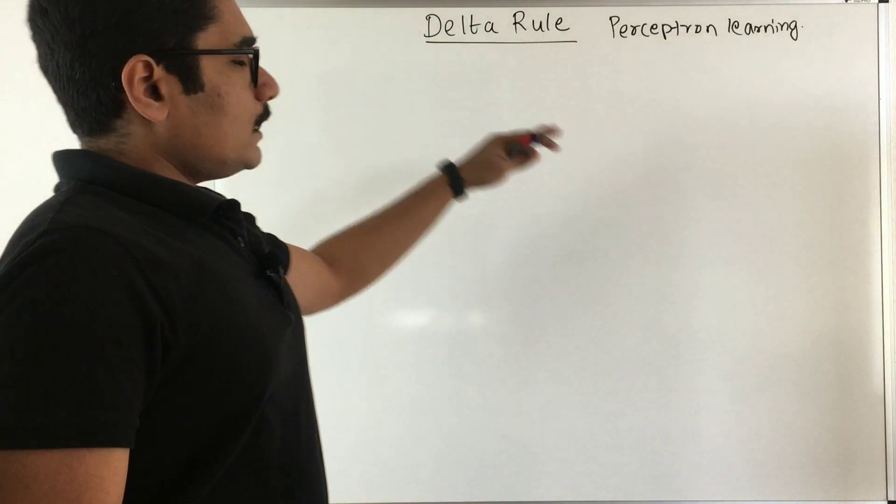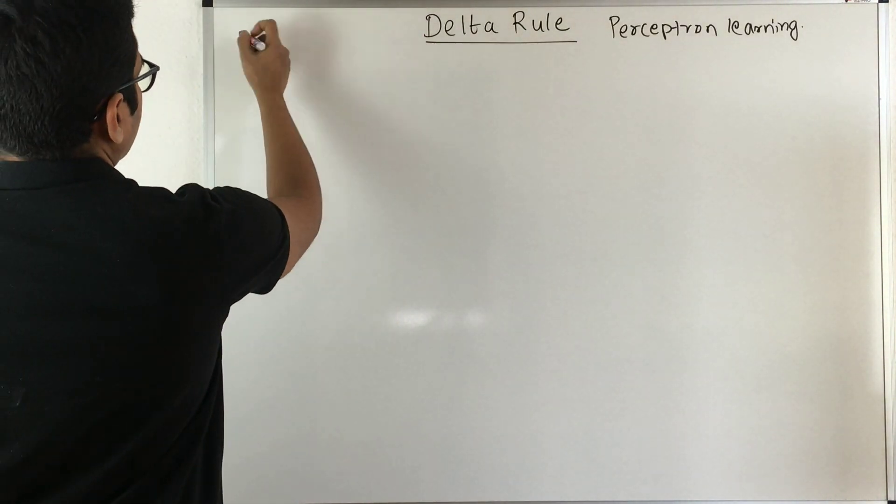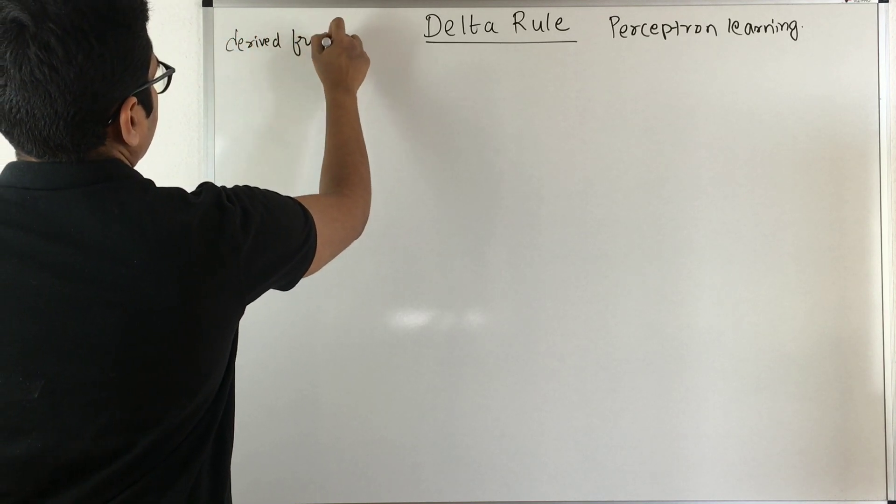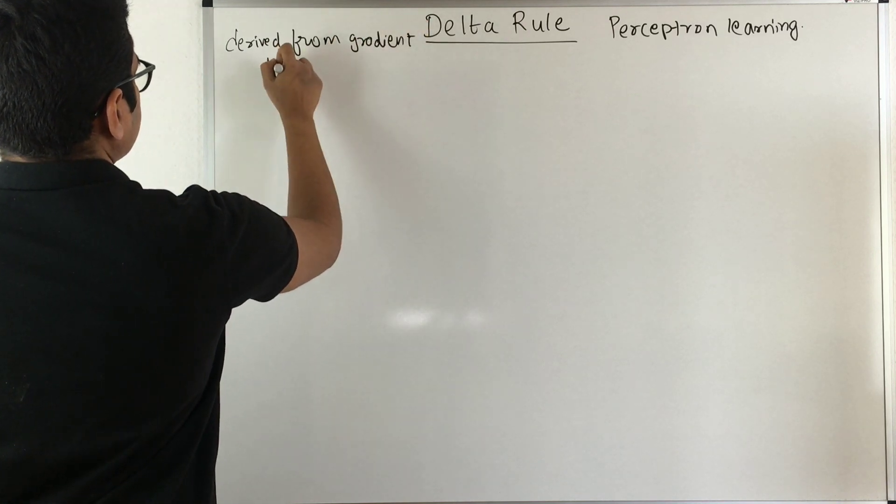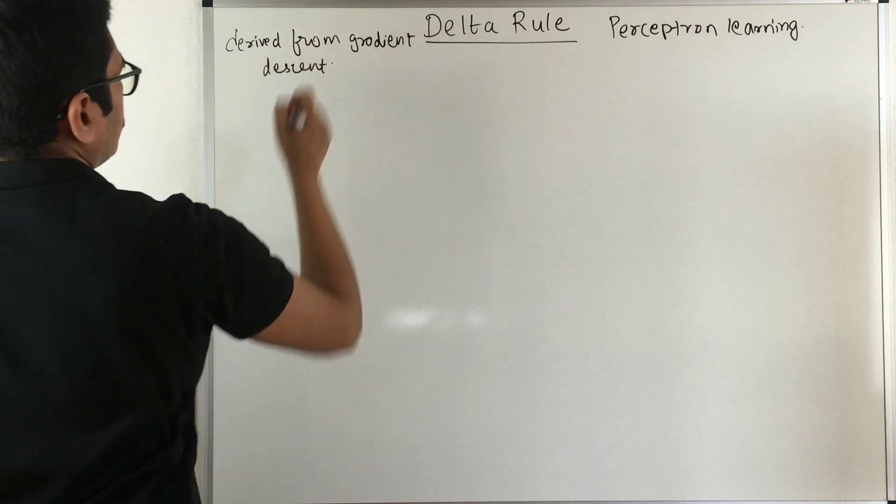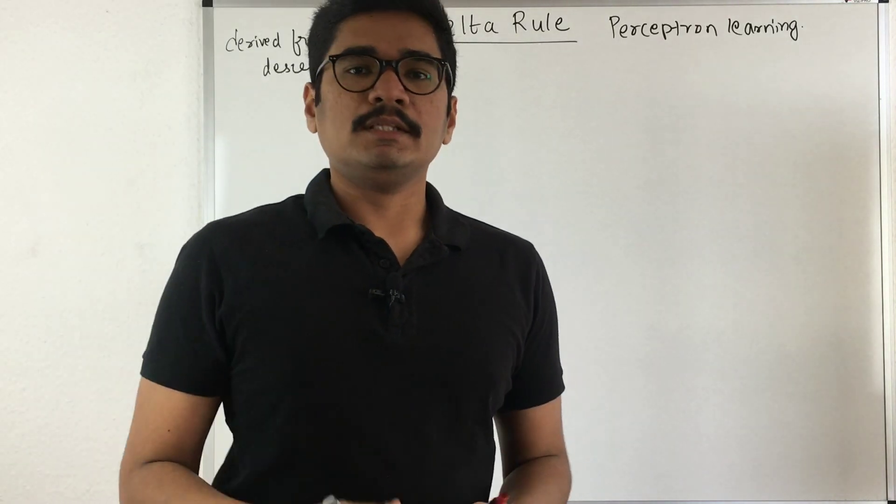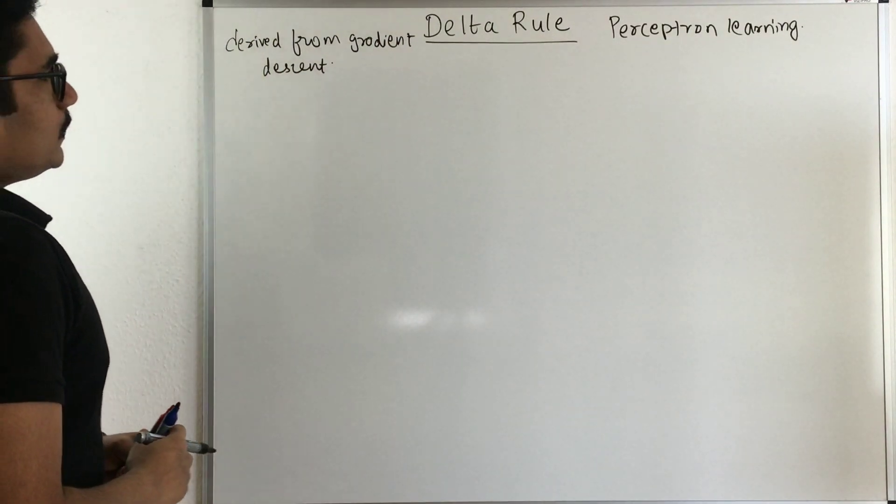Delta rule is mainly used for updation of the weights. Essentially this Delta rule comes from or it is derived from your gradient descent. Gradient descent we already know that is from our linear regression. I'll just put the link in the description, you will check that video.